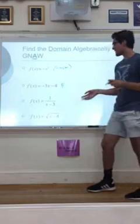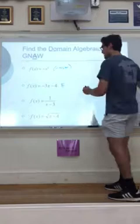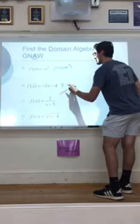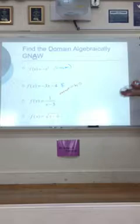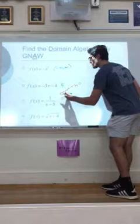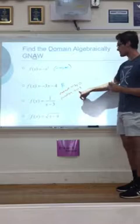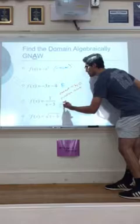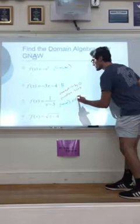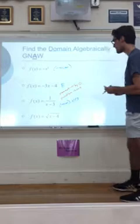In number 3, I do see a problem. Because I have this fraction, I know that I cannot divide by 0. That problem happens when x equals 3, because 3 minus 3 in the denominator gives me 0. So my domain is all real numbers except when x equals 3. Anything else is totally fine.